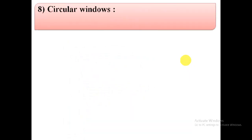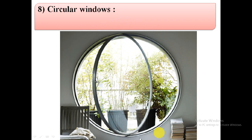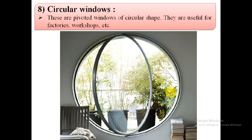The next type is circular windows. Circular windows are pivoted windows of circular shape. They are useful for factories, workshops, etc.